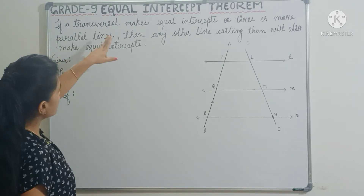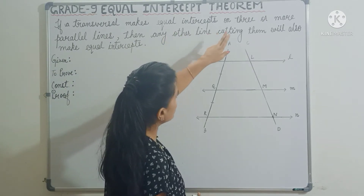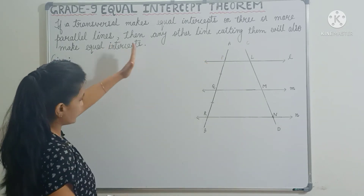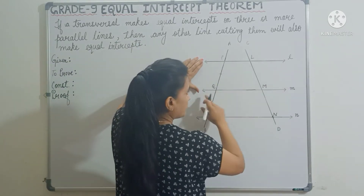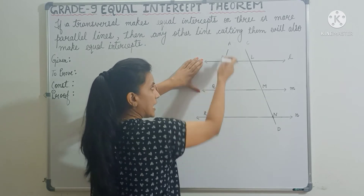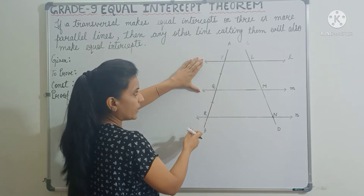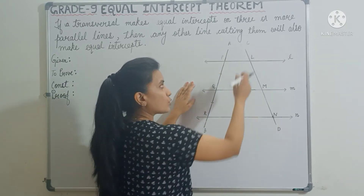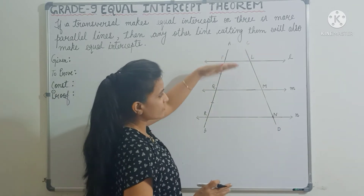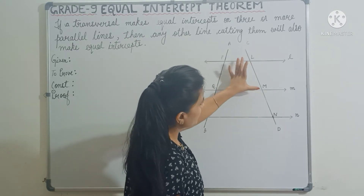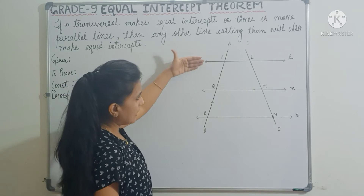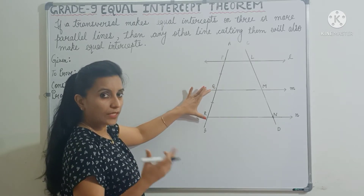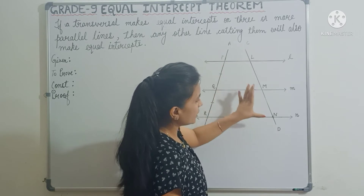The statement is: if a transversal makes equal intercepts on three or more parallel lines, then any other line cutting them will also make equal intercepts. Here I have drawn three parallel lines L, M, N. AB is a transversal making equal intercepts on these three parallel lines, so even CD will make equal intercepts. LM will be equal to MN. So if L, M, N are parallel lines and PQ is equal to QR, then we can conclude that LM will be equal to MN.